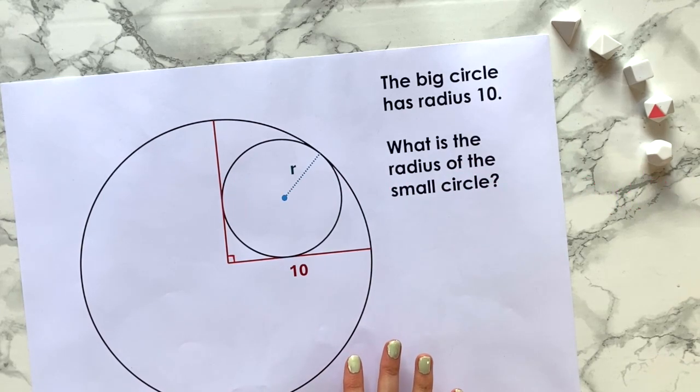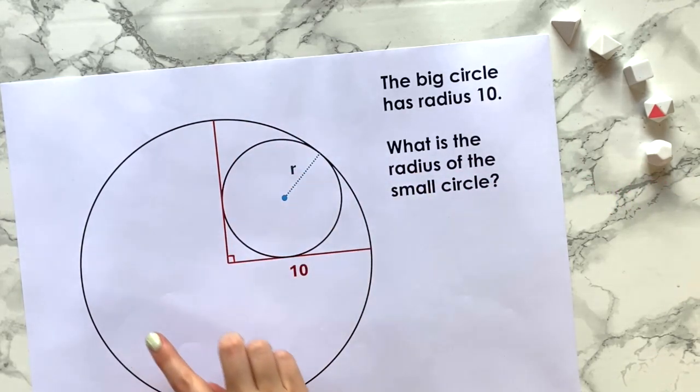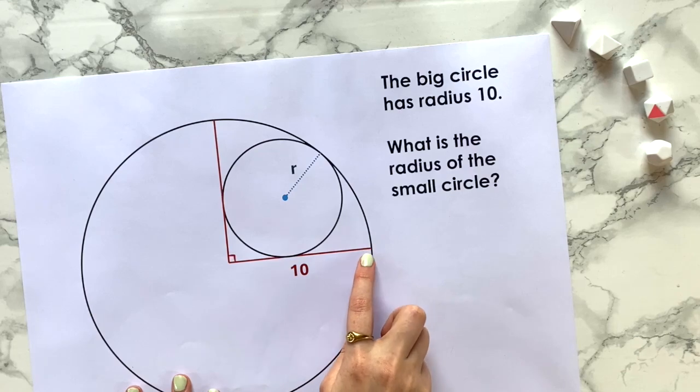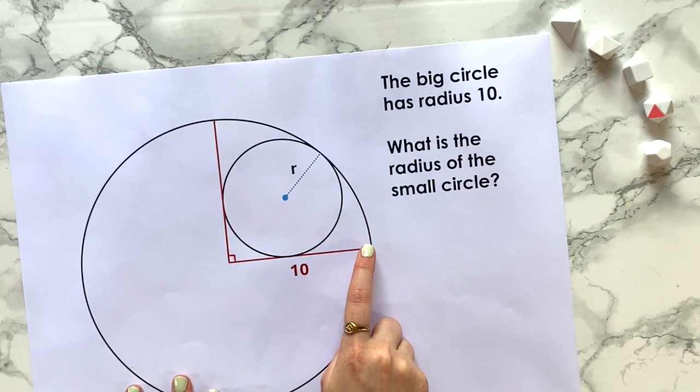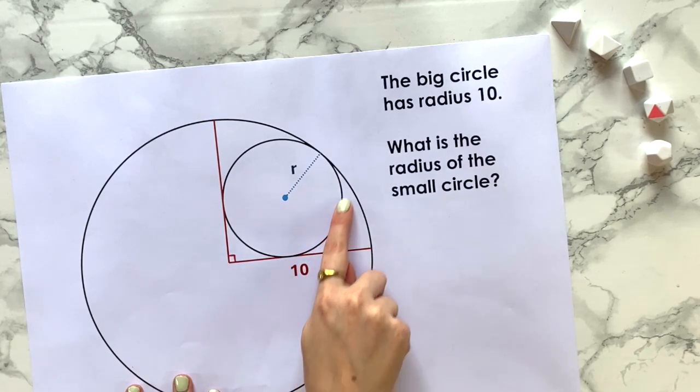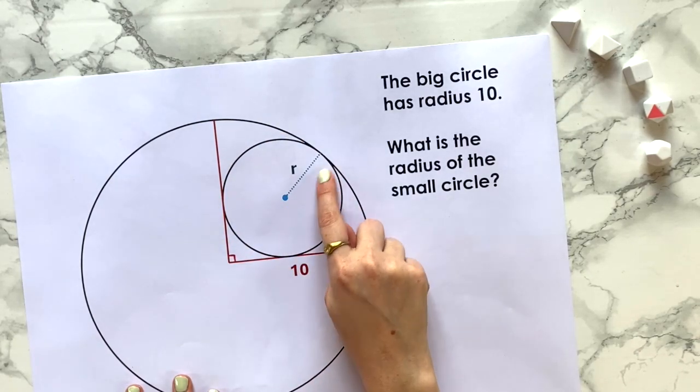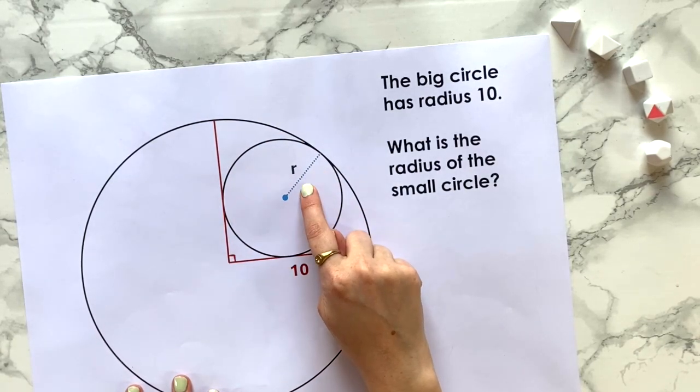I came across this interesting geometry question. We have a big circle with radius 10, and inside that big circle, sort of sandwiched in between two of the radii of the bigger circle, we have a smaller circle with the radius that we don't know. The question is simply: what is the radius of the smaller circle?